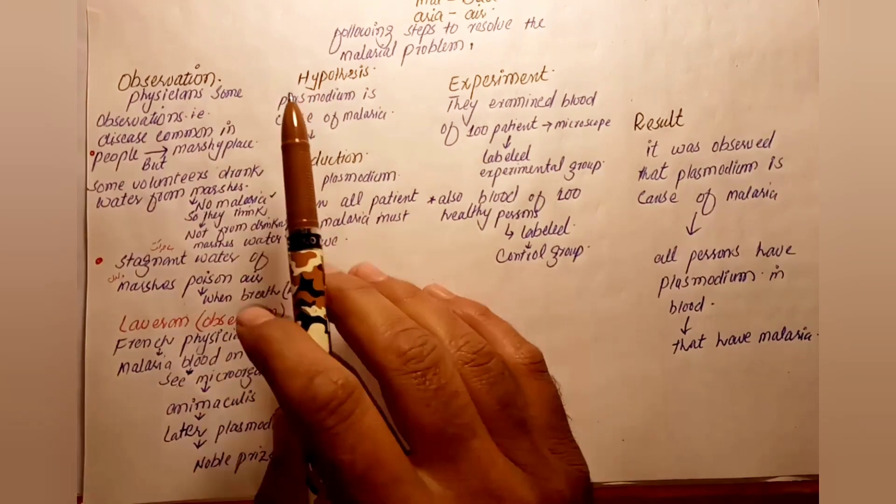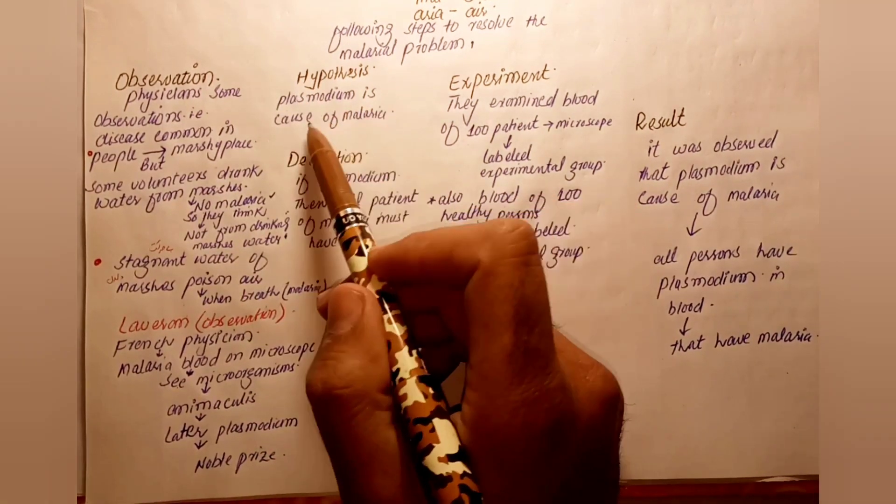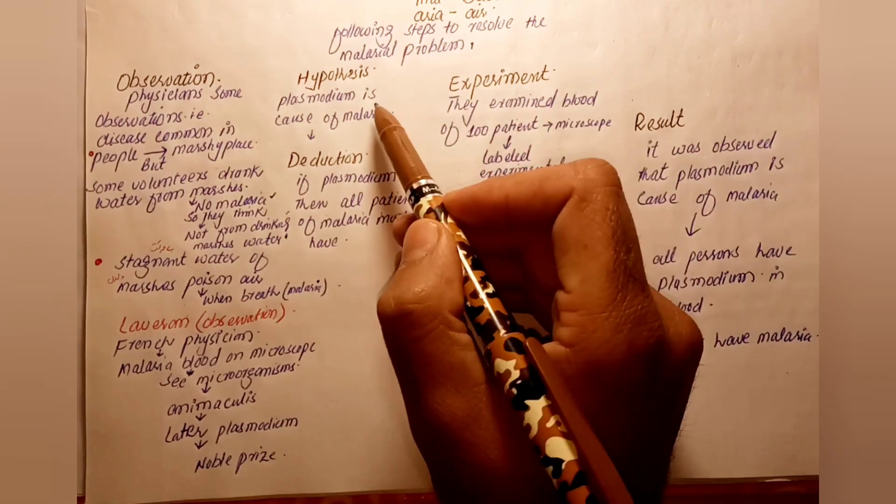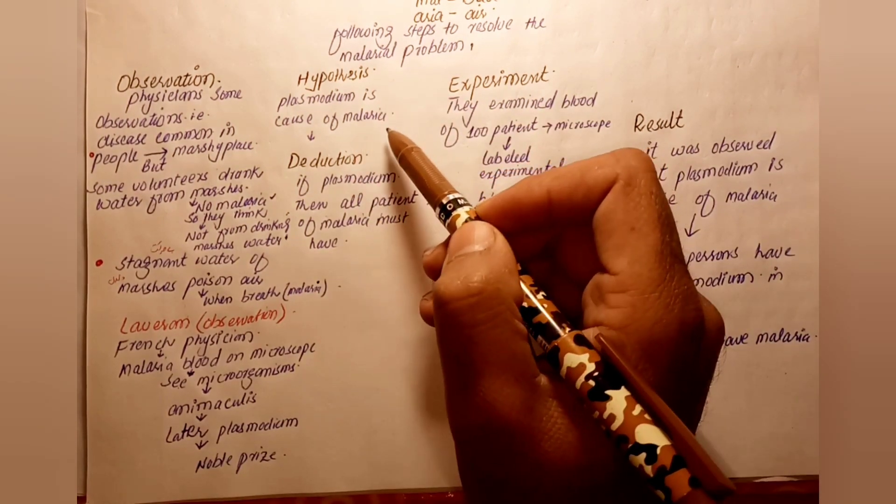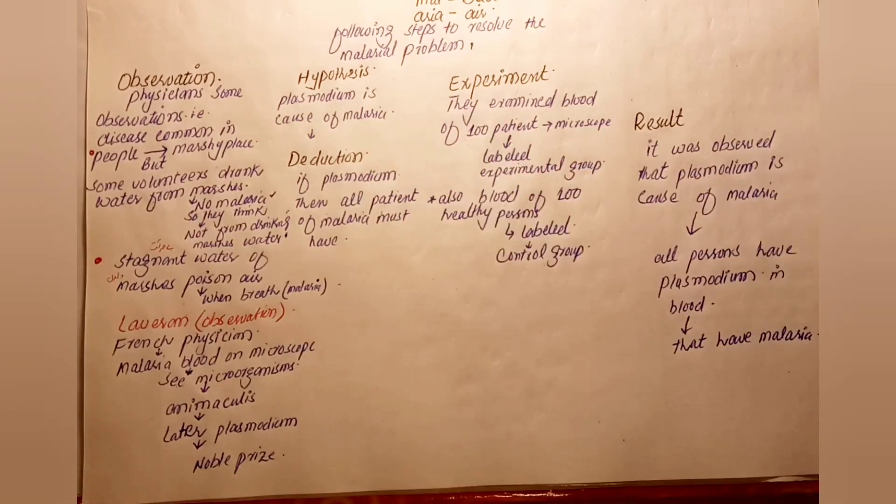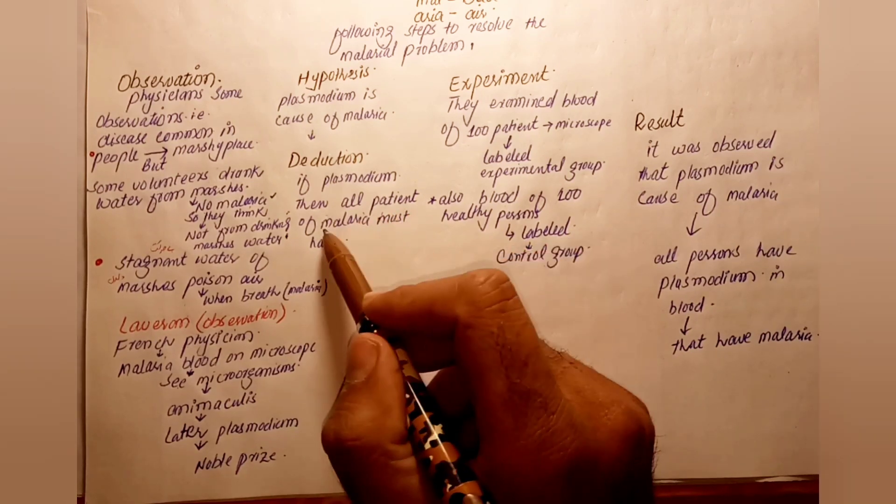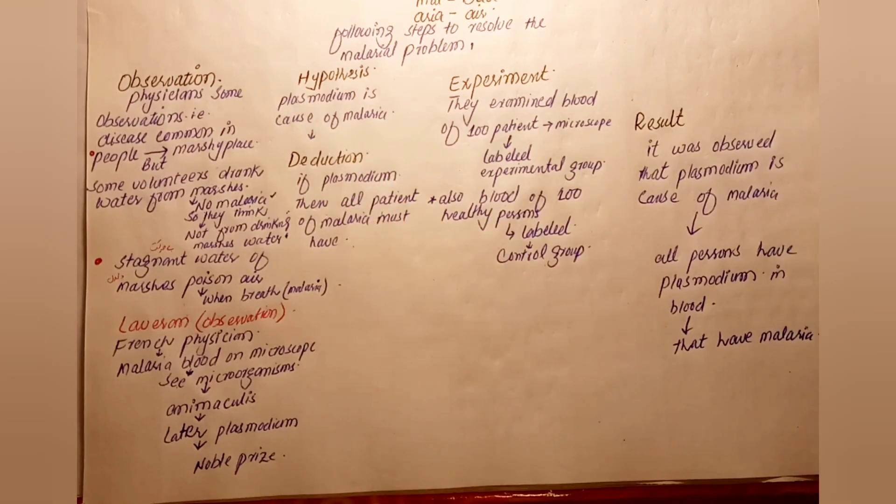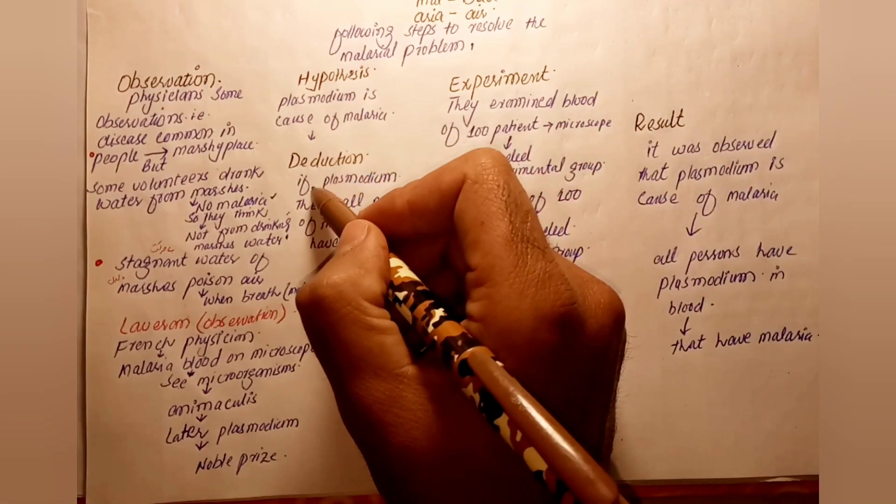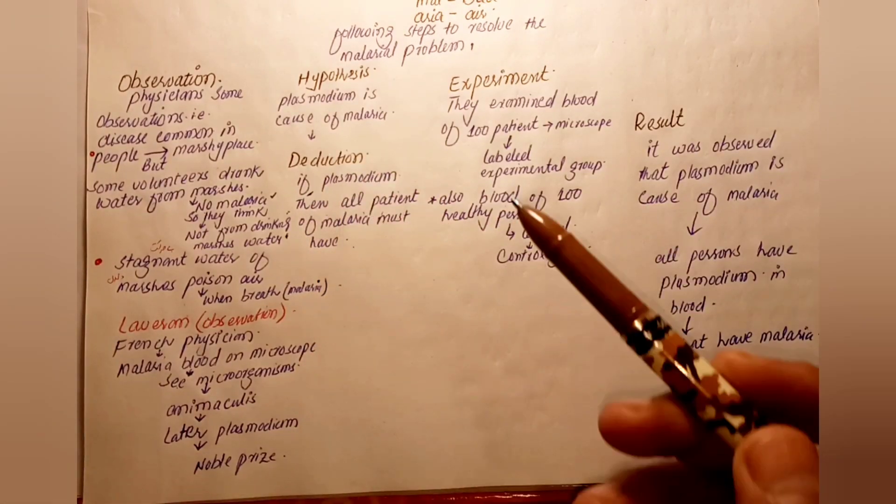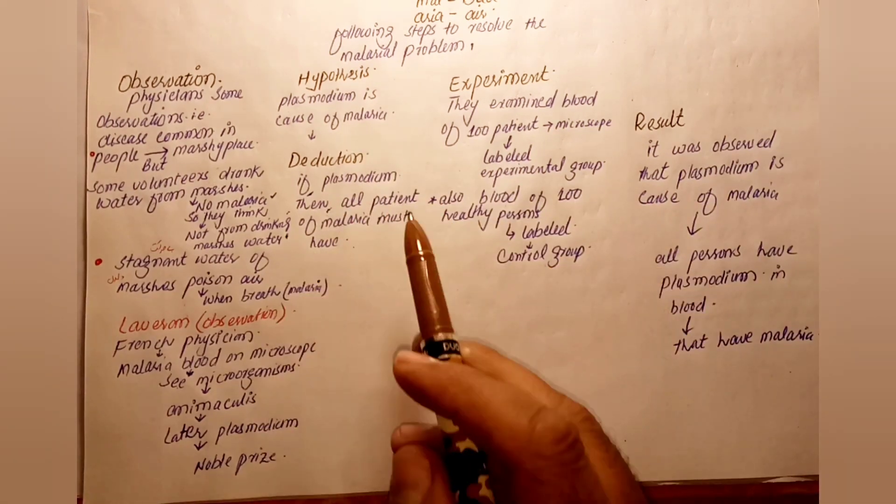The second step is the hypothesis. The hypothesis was: Plasmodium is the cause of malaria. If Plasmodium is the cause of malaria, then all patients with malaria must have Plasmodium in their blood.